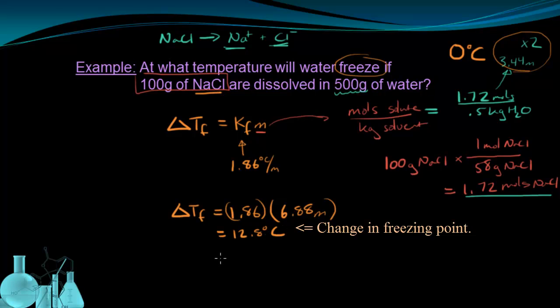So it's really 0 minus 12.8 degrees Celsius, meaning the new freezing temperature, the new freezing point of the water, is negative 12.8 degrees Celsius. A solution made by dissolving 100 grams of sodium chloride into 500 grams of water would require a temperature of negative 12.8 degrees Celsius to freeze.